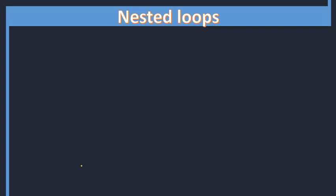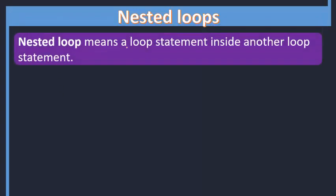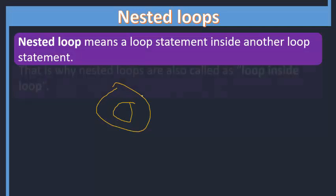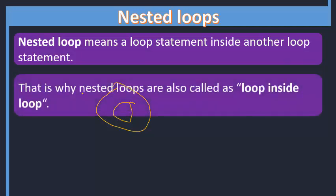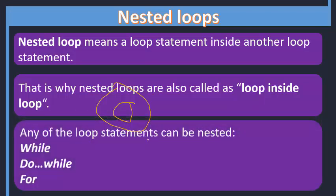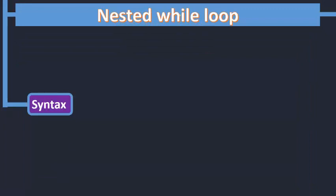Now, nested loops. A nested loop means a loop statement inside another loop statement — putting one loop inside another loop. That is called a nested loop, also called loop inside loop. Any of the looping statements can be nested — you can nest the while loop, the do-while loop, and the for loop.